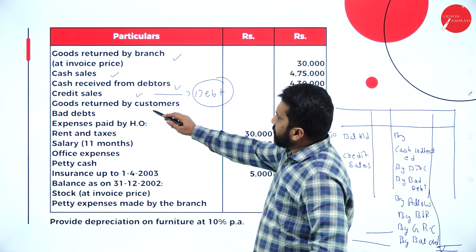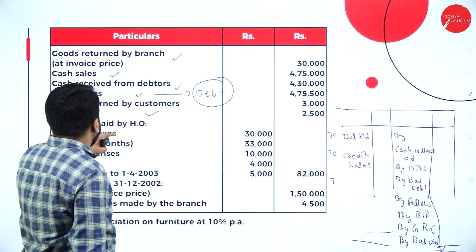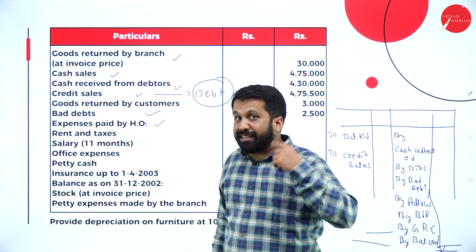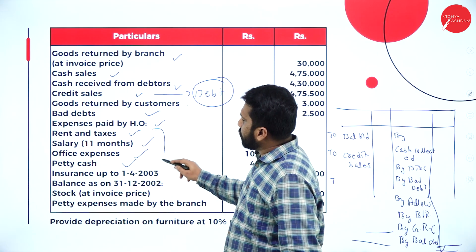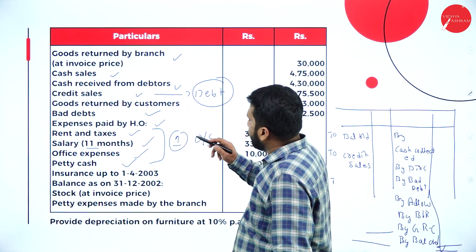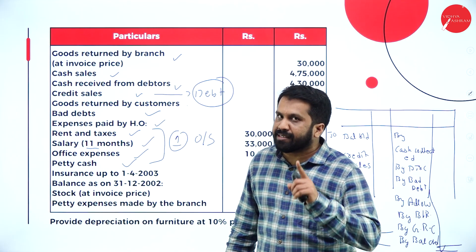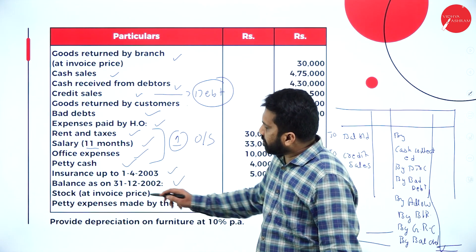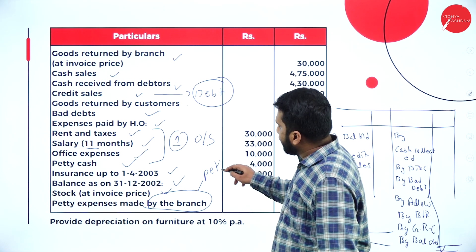Credit sales and goods returned by customer — you know where they go: credit side. Bad debts also go to the credit side. Expenses paid by head office — rent, taxes, salary, office expenses — all go to branch stock. If eleven months of salary are given and one month is outstanding, in a year we have twelve months, so one month is outstanding. That outstanding balance goes under closing balance. Stock at invoice price and petty expenses made by branch go to the petty cash account.